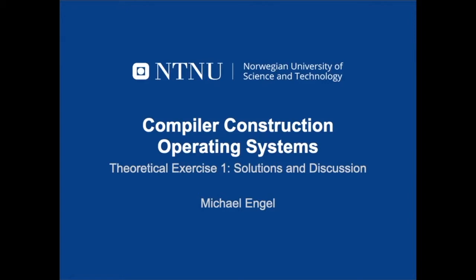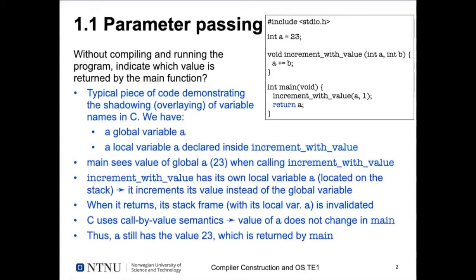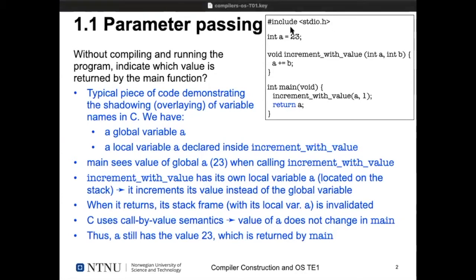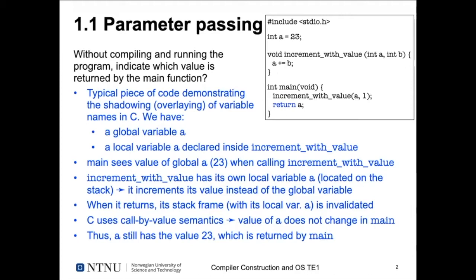The first C program: we included the standard IO header, declared a variable `a = 23`, a function `increment_with_value` which got two parameters `a` and `b` and added `b` to the value of `a`, and a main function which calls `increment_with_value` with `a` and constant `1`, then returns `a`. The idea was to think about what this program does — specifically, which value is returned by main. This demonstrates the shadowing of variable names in C.